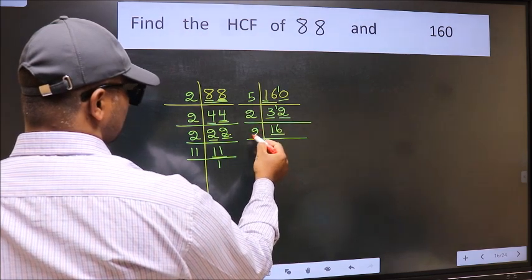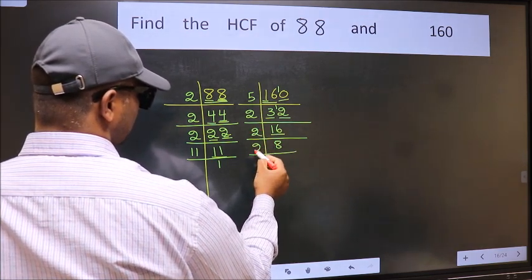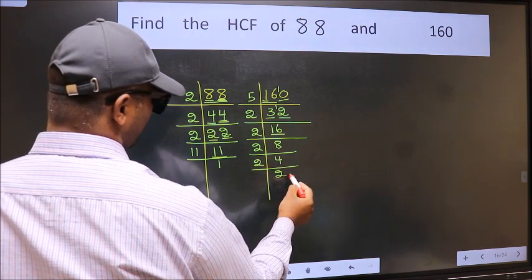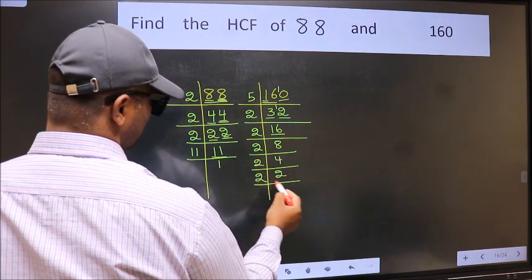Now 16 is 2 eights 16. 8 is 2 fours 8. 4 is 2 twos 4. 2 is a prime number, so 2 once 2.